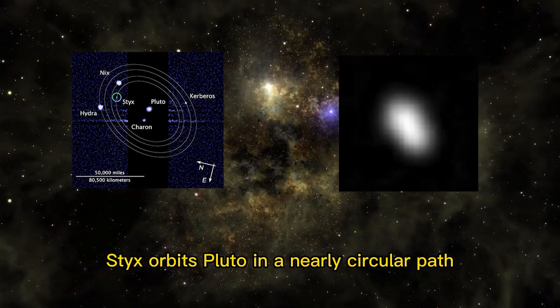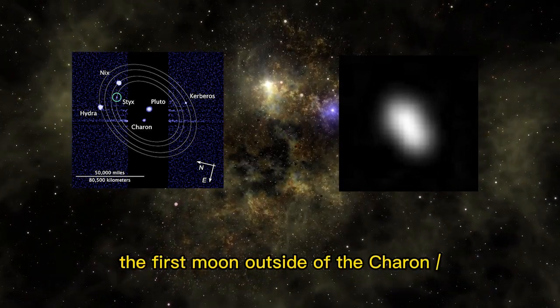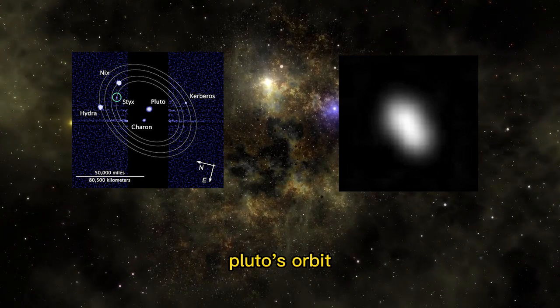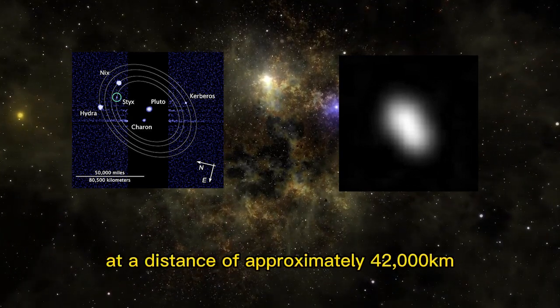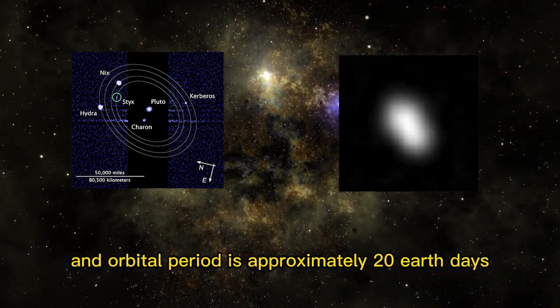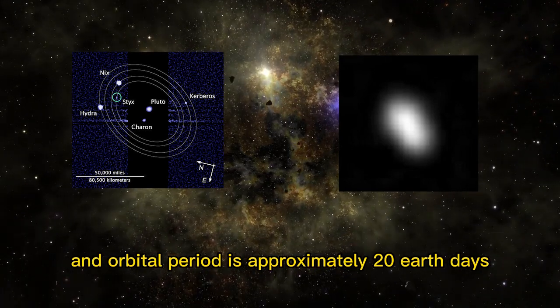Styx orbits Pluto in a nearly circular path, the first moon outside of the Charon-Pluto orbit. Styx orbits Pluto at a distance of approximately 42,000 kilometers, and its orbital period is approximately 20 Earth days.